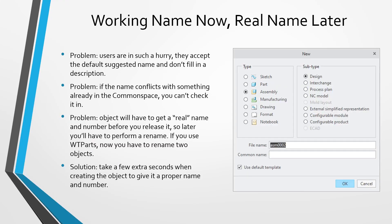First off, a lot of times people will just use the default names that Creo Parametric suggests to you. They don't give it a real file name, they don't give it a real common name — they just go with the default that pops up in the dialog box. The problem is, a lot of times I go into the common space of different companies I've worked for and I'll see that people have checked in parts with names PRT0001, 002, 003.